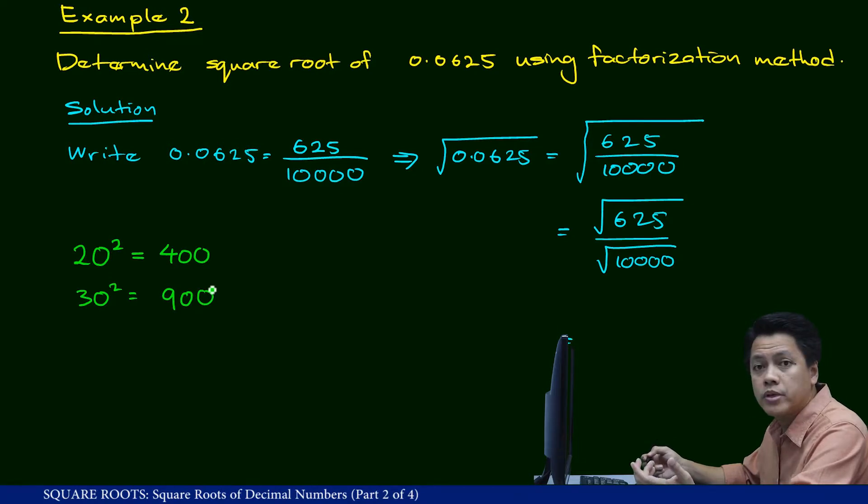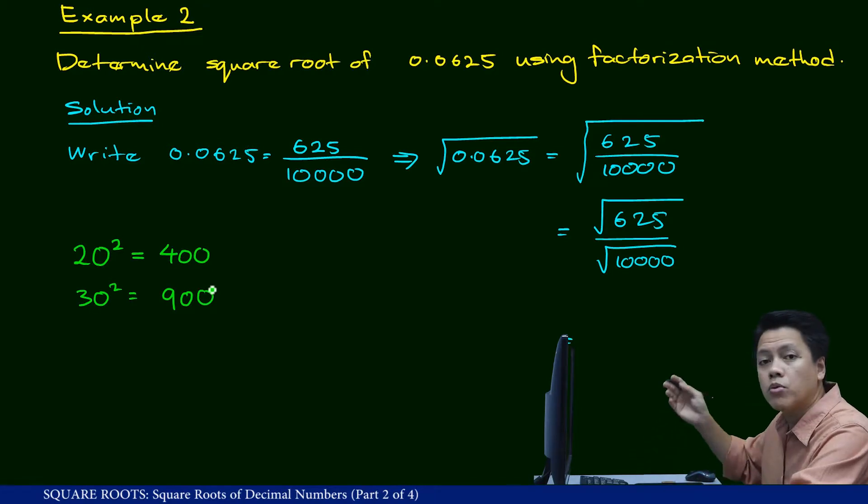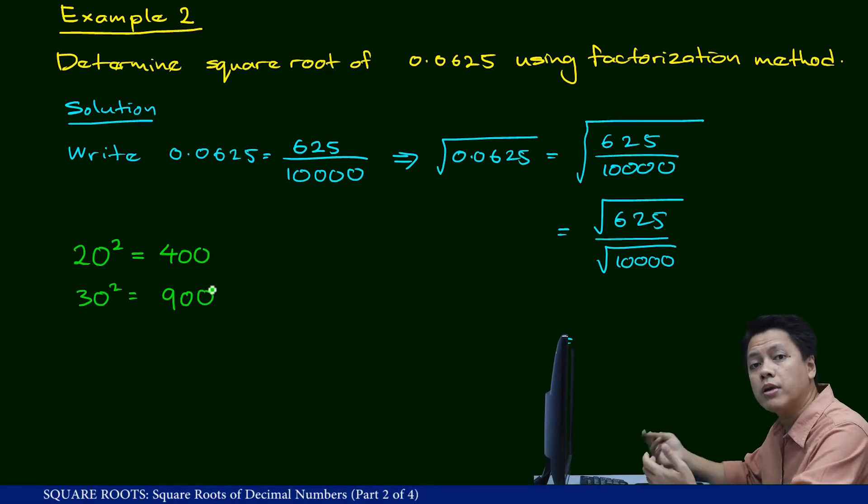Well, it could be the right answer. It could also be a wrong answer. If you find out that the square of 25 is more than 625, then we might want to reduce that. If it's less, then we might want to pick up a number that is more than 25. So let's just pick up 25.